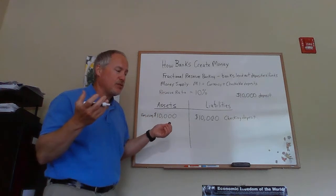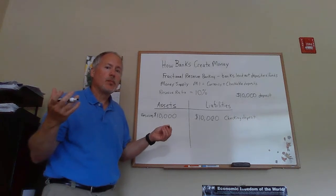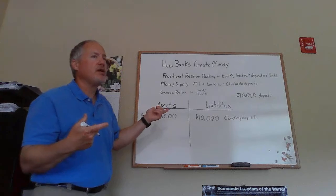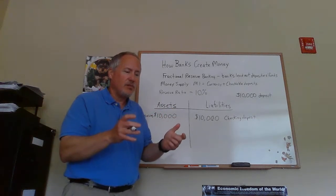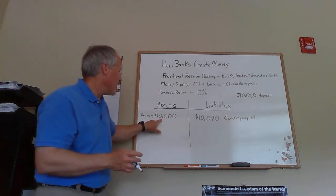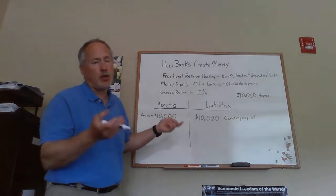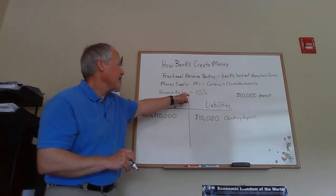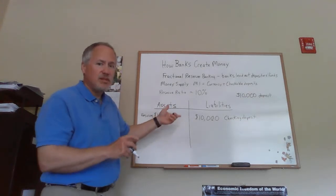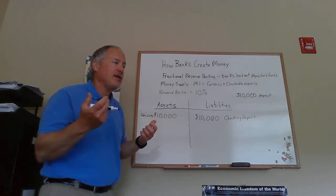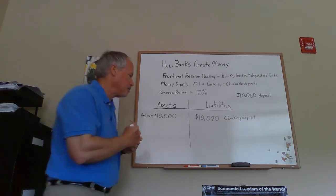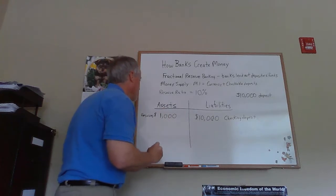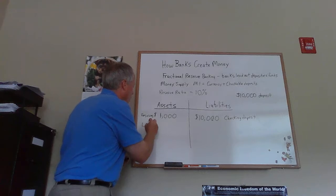Because the bank operates with fractional reserve banking, when it receives this money it will want to make a loan. Suppose the bank wants to keep ten percent of all deposits as reserves — that's one thousand dollars — and lend out the remaining nine thousand dollars. So they take nine thousand dollars of that original ten thousand and make a loan to somebody, keeping one thousand dollars as reserves.